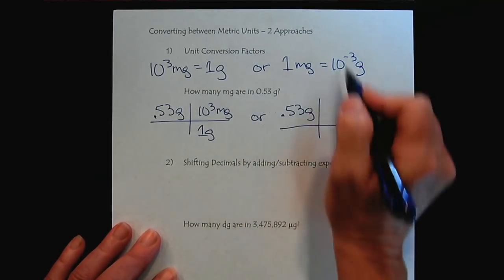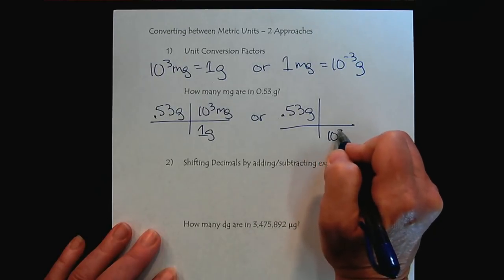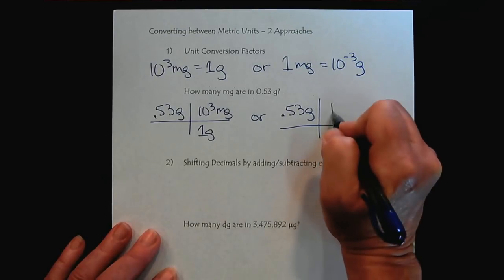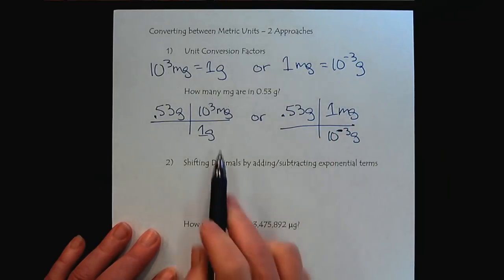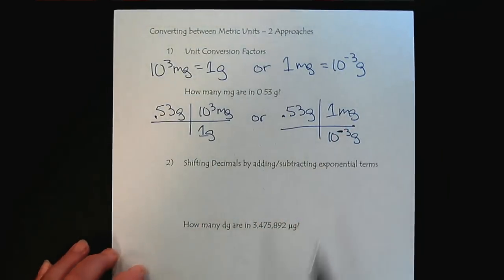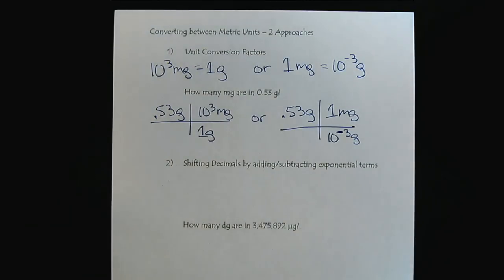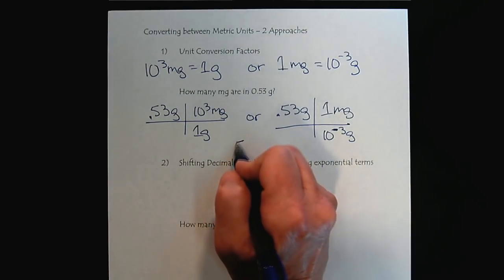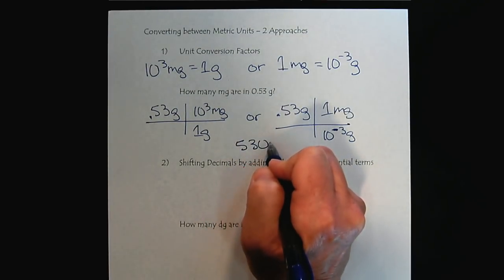There's ten to the minus three grams in every milligram. Notice that it doesn't matter which way you set up the calculation. When you plug in the values, we're going to get the same result. So let me punch that into my calculator. Either way we're going to have 530 milligrams.